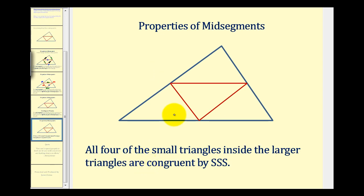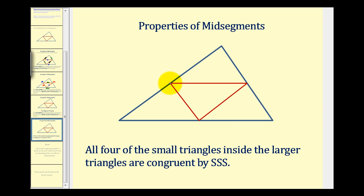The last property we'll discuss in this video is that all four small triangles inside the larger triangle are congruent by side, side, side. Let's take a look at why that is. Well first, if this is a midpoint of this side of the triangle, we know that this segment is congruent to this segment.